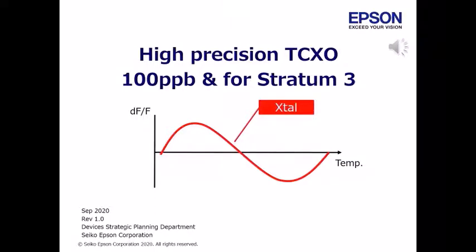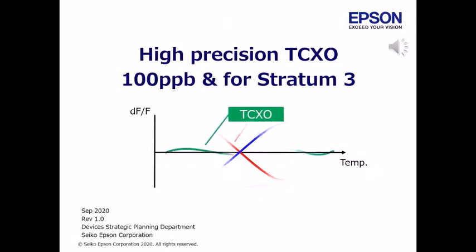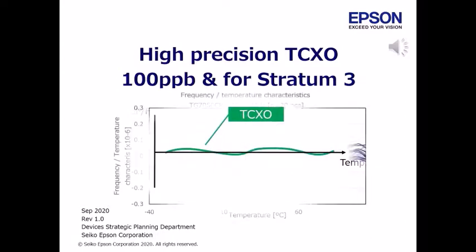I would like to introduce the 100 ppb TCXO up to 105 degrees Celsius and TCXO for Stratum 3. These products are targeted at synchronized networking applications and other applications that require a synchronized control function.